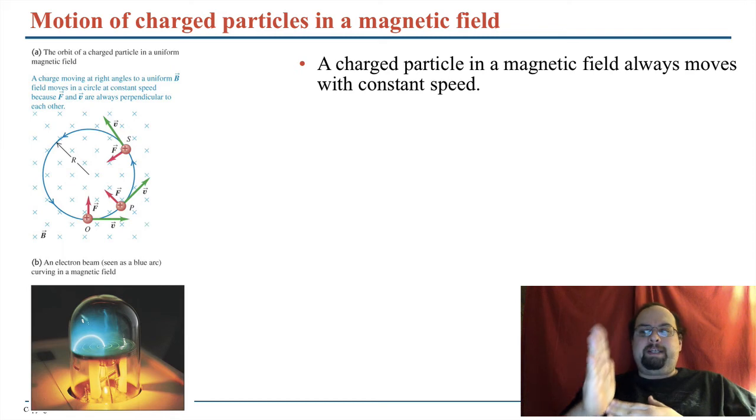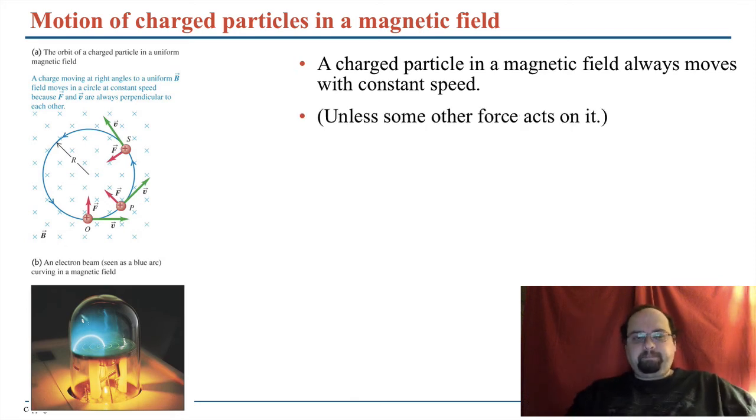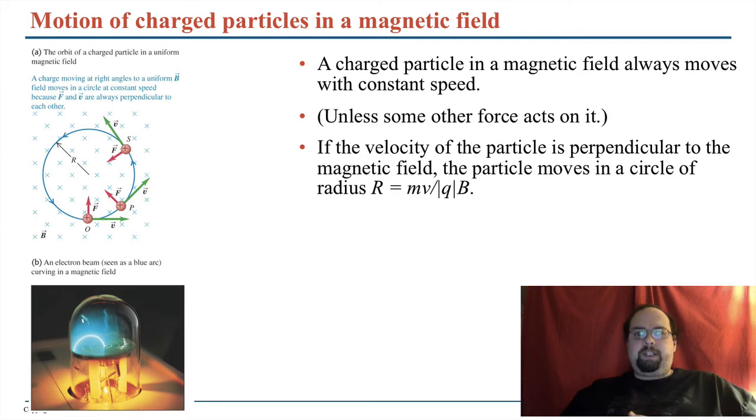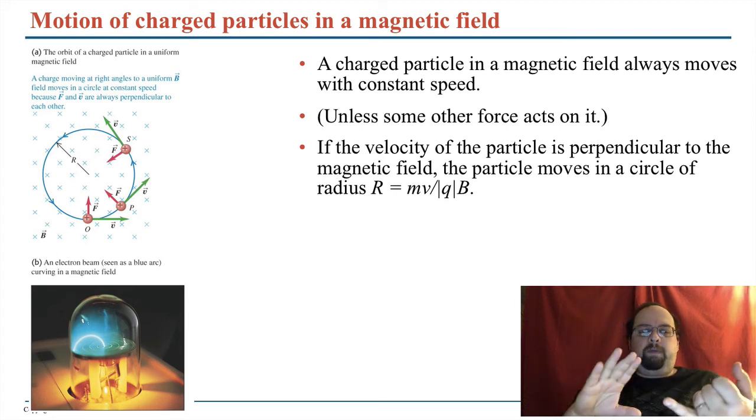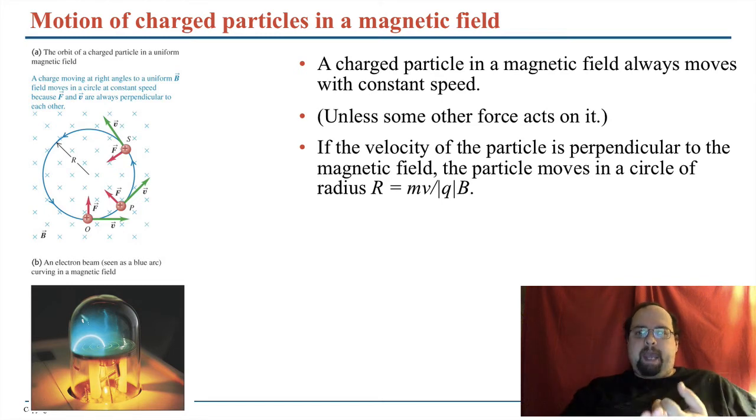And since the direction is changing, the magnetic force is always changing because it's always perpendicular to both. So that results in a circular path every time, unless some other force acts on it, which could change that. But if it's just that force, it is going in a circle the whole time. And any object that moves in a circle, remember its acceleration is V squared over R, right? So if you take the force F equals MA, you get the force is QVB sine theta.